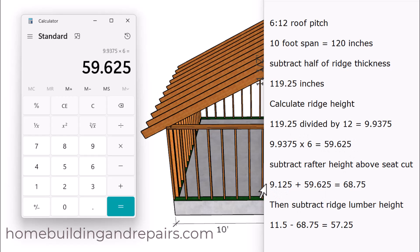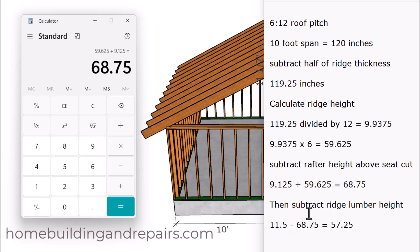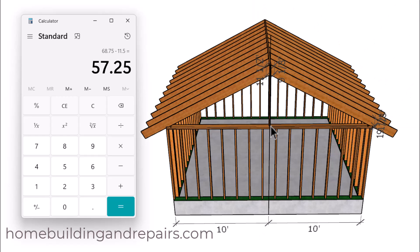Then we add the 9 and 1/8 inch measurement: 9.125. That gives us 68 and three quarters of an inch — basically the measurement to the top of the roof rafter or the top of the ridge. To find the post height, we subtract the height of the roof ridge: 11.5 inches, giving us 57 and a quarter inches. That's the measurement from the top of your framing plate to the bottom of the roof ridge.